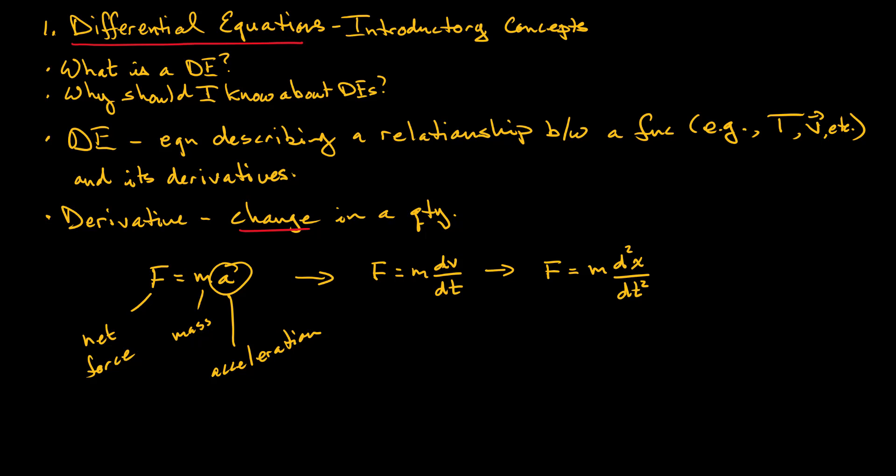Recall that the acceleration is the time rate of change of the velocity. So we can write Newton's second law as F is equal to the mass times the first derivative of the velocity with respect to time. So this is what we would call a first order differential equation for the velocity v.